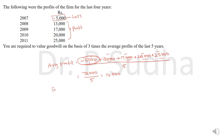Now calculate goodwill: average profit multiplied by number of years of purchase. Here it is given as 3 years, so 14,000 × 3 = 42,000. The key point is: if you have a loss, you deduct it instead of adding it.